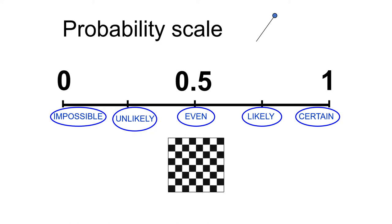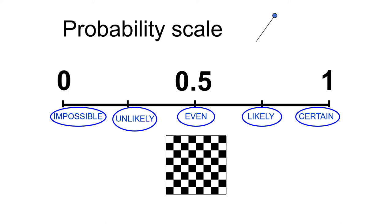An even chance: imagine a chessboard or draughts board - the chance of landing on a black or white square is even. Even happens when there is the same chance of getting two outcomes. For example, if you toss a coin it can be heads or tails. If you roll a dice, you have an even chance of getting an even number because half the numbers are even.